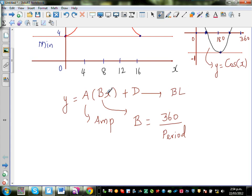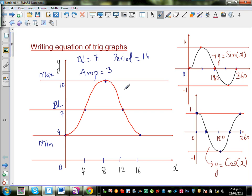So a is the amplitude, b from b you can decide the period or from the period you can decide the b, and d is your baseline. So I can see the baseline. Baseline is 7.